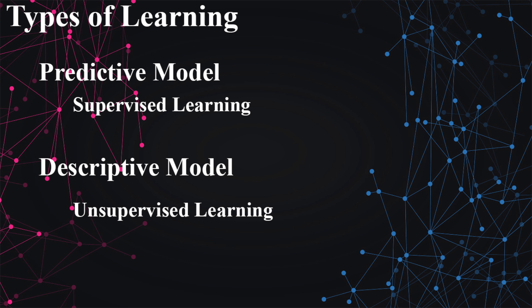There is a third type — reinforcement learning — which can sometimes fall under unsupervised learning, but in general is called semi-unsupervised. It's kind of a gray area. We don't necessarily have output data, but we're teaching it in much the same way we would a predictive algorithm. For now, just knowing these two main types of learning is going to be more than enough.